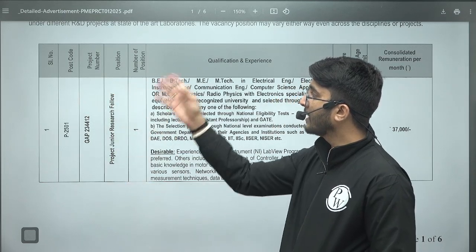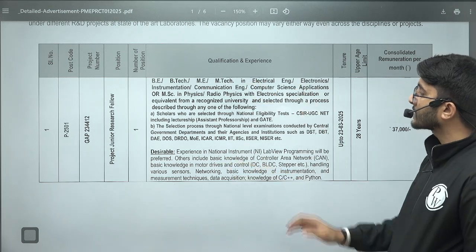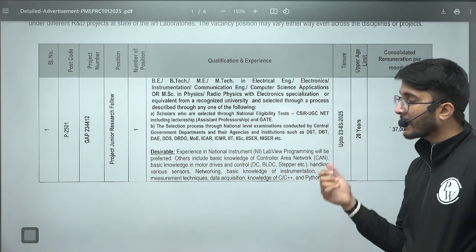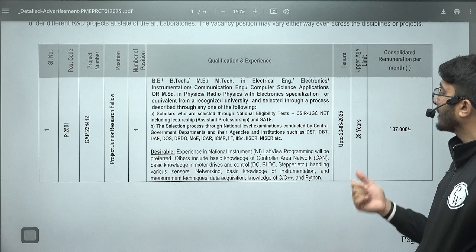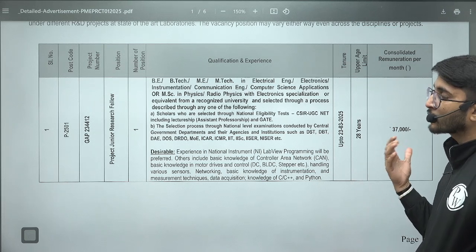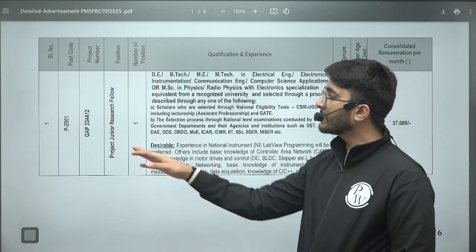The number of positions, everything is mentioned here, and the qualification and experience is also there. Tenure, like up to which date this project will go on, is also mentioned, and upper age limit is also available. The amount of fellowships or stipend you will receive is also available.